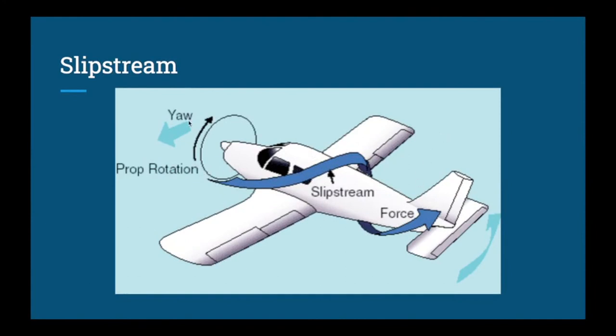Sitting in the pilot seat, the prop rotation is clockwise. The slipstream is the airflow wrapping around the airplane fuselage and pushing on the tail. With air pushing on the left-hand side of the tail trying to push it to the right, the nose is going to want to yaw to the left. Slipstream is most noticeable when going from a low power setting to a high power setting, such as at takeoff. I'll demonstrate slipstream during the takeoff roll so you can witness the yaw it produces.